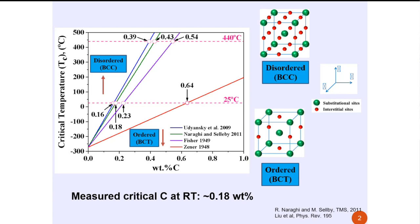There are several models which estimate this critical temperature across which this order-to-disorder transformation would take place. According to the original estimates of Zener, at room temperature, if the carbon content is more than 0.64, martensite would be tetragonal. But if the carbon content is less than 0.6, martensite is expected to be cubic. More recent estimates suggest that if the carbon content is more than 0.2 at room temperature, we expect body-centered tetragonal structure, whereas if the carbon content is less than that, we will have a cubic structure.